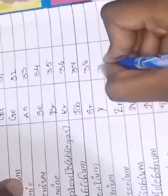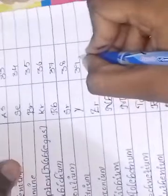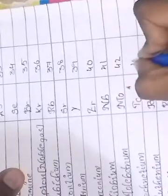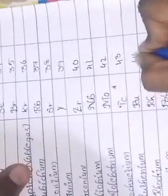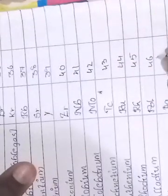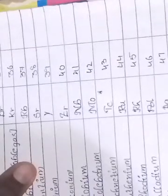By the way, the atomic numbers are: gallium 31, germanium 32, arsenic 33, selenium 34, bromine 35, krypton 36, rubidium 37, strontium 38, yttrium 39, zirconium 40, niobium 41, molybdenum 42, technetium 43, ruthenium 44, rhodium 45, palladium 46, silver 47, cadmium 48, indium 49, tin 50.